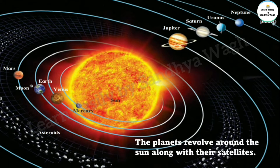Planets, while rotating on their own axis, also revolve around the sun. So these planets carry their satellites along as they revolve around the sun. Satellites revolve around planets, and planets revolve around the sun.